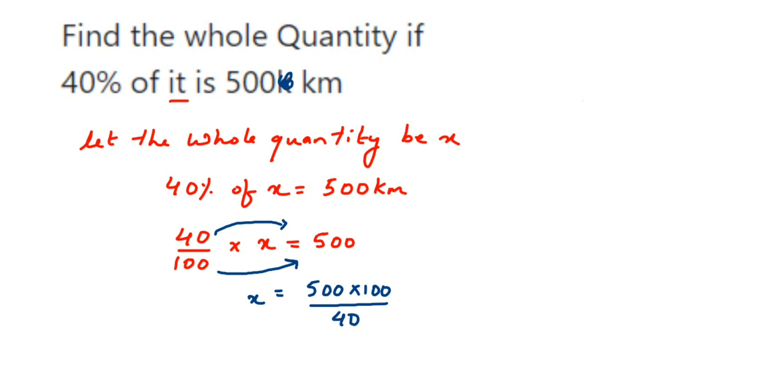So here, it's better if I show the arrow in this way. This 40 is going to come in the denominator and the 100 is going to get in the numerator - cross multiplication.